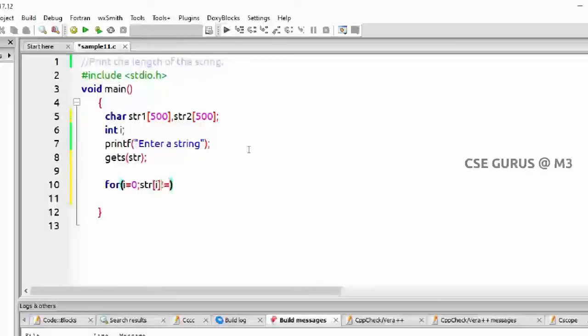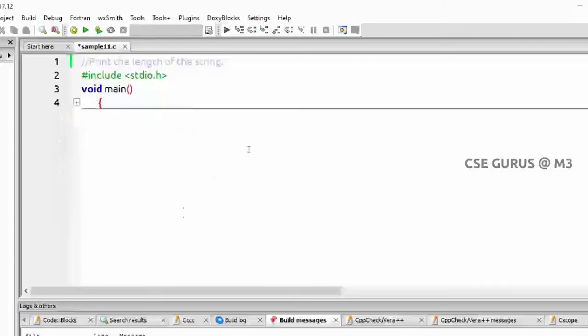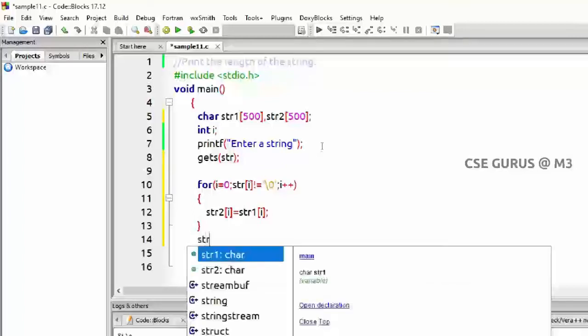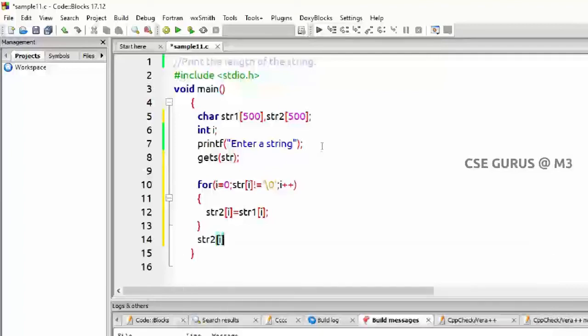Then what you have to do? I told you like we have to copy. We'll write like this: for i equals 0, str of i is not equals to null character, i plus plus. Then what you are doing? You are simply copying str2 of i equals to str1 of i. Simply you copied.